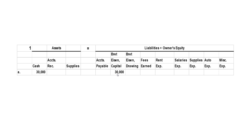Drawings represents withdrawals that he might make. And then we have some temporary accounts — revenue accounts. Revenues represent fees or other monies earned by doing whatever it is the company does. Expenses represent costs incurred in order to generate these revenues. The definition of an expense is usually considered the wasting away or consuming of an asset to generate revenues.